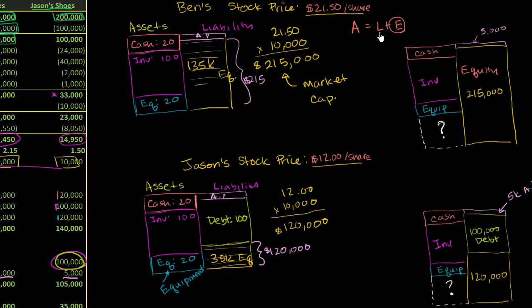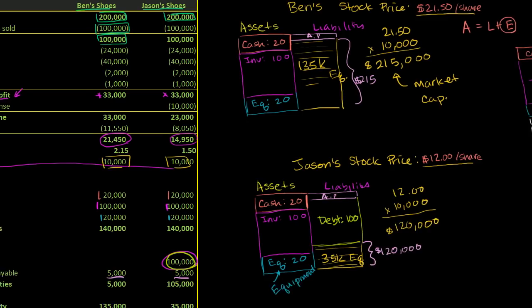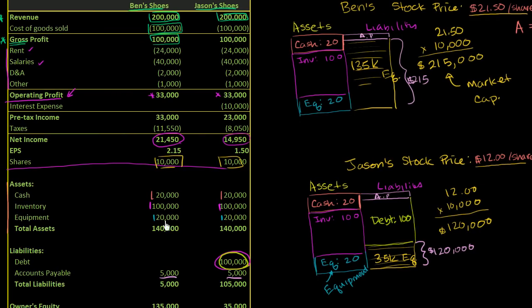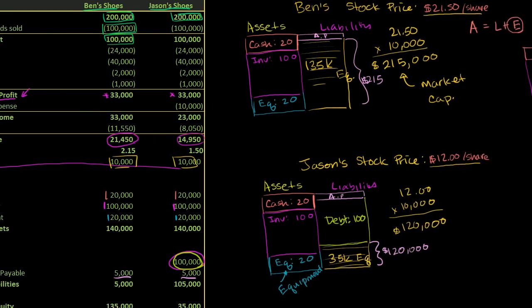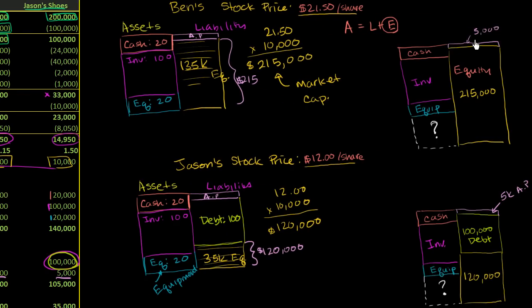And the only liability that Ben's shoe company had was this $5,000 in accounts payable. So let me show you that right over here. He had this $5,000 in accounts payable, also depicted over there. So the liabilities plus the equity in the case of Ben's company is $215,000 plus $5,000. So this piece right over here is $220,000.